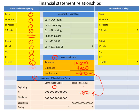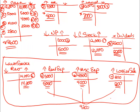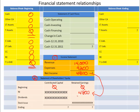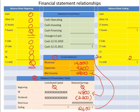Both contributed capital and retained earnings at the beginning of the year were zero because it was a brand new company. There were dividends of $2,200. So of the net income of $4,800, $2,200 was paid out to shareholders. That means retained earnings is the difference: $2,600. On the ending balance sheet, we're going to show an ending balance in retained earnings of $2,600.